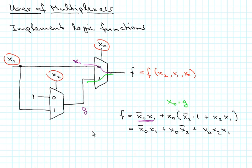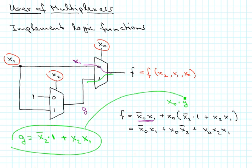But the function g itself comes from a multiplexer and it can be written as being x2 not because it's from the upper data input times 1, because that input is set permanently to 1. And then plus x2 when x2 is 1 we take the lower input here which happens to be x1.